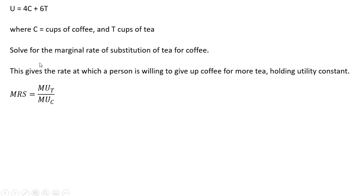The marginal rate of substitution is going to equal the marginal utility of tea. For the marginal rate of substitution of tea, the marginal utility goes in the numerator. And then for coffee, the marginal utility of that appears in the denominator.